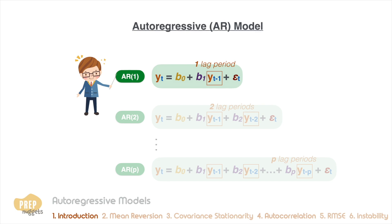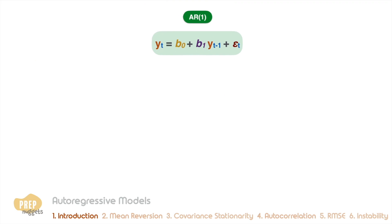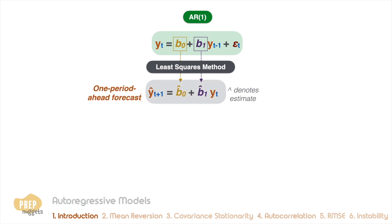Forecasting using an AR(1) model is very much similar to what we've learned for linear regression so far. We estimate the parameters for the intercept and coefficient using the ordinary least squares method and use the current observation as the input. Our output will be the forecast value of the dependent variable for the next period. This is known as a one-period-ahead forecast.